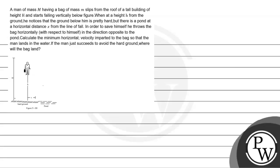Hello! Let's read the question. A man of mass capital M having a bag of mass small m slips from the roof of a tall building of height capital H and starts falling vertically. When at a height small h from the ground, he notices that the ground below him is pretty hard, but there is a pond at a horizontal distance x from the line of fall. In order to save himself, he throws the bag horizontally in the direction opposite to the pond. Calculate the minimum horizontal velocity imparted to the bag so that the man lands in the water.